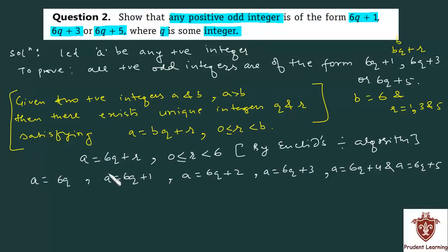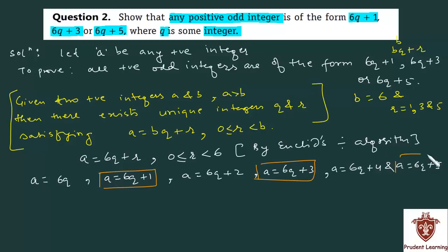The question states that any positive odd integer can be represented as 6q plus 1, 6q plus 3, or 6q plus 5. But we must justify why the remaining forms cannot represent a positive odd integer.